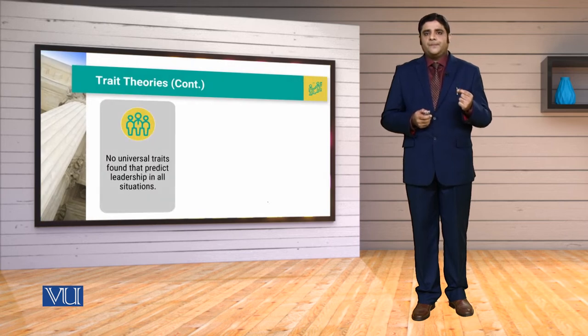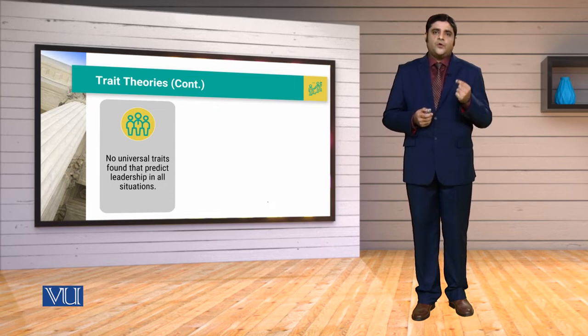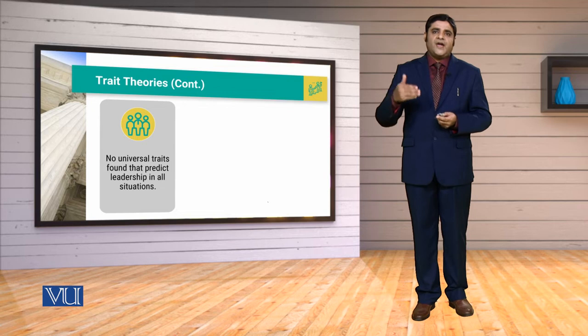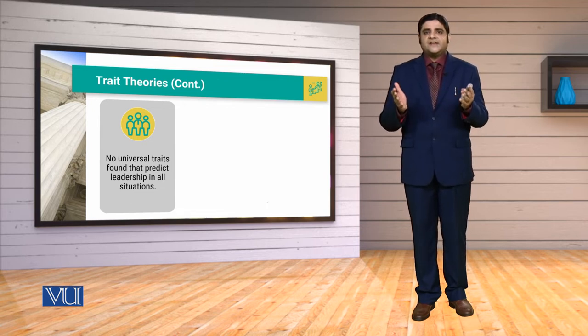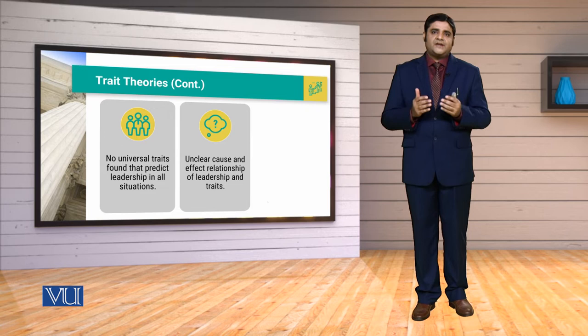Ab trait theories mein jo hummeh kuchh mushkilat ka saamna karna pada, unmeh number one yeh hai ke no universal trait was found that predicts leadership in all situations. Hameh koi aisi universal trait na mili jo har situation mein har leader ke andar mojood ho, because different situations mein leaders ne different tariqon se behave kiya, unke trait sets different thae. Second aspect was the unclear cause and effect relationship of leadership and traits — jab cause and effect relationship establish na ho saka, to the traits were becoming weak to define who is a leader.